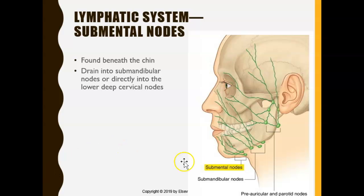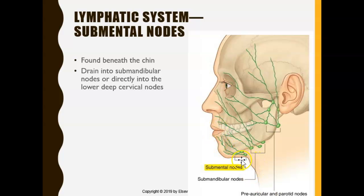The submental node is right underneath the chin. Only the lower incisor teeth drain here — the lymph fluid from the lower incisors gets drained and moves up into the submental nodes. There are blood vessels and lymphatic vessels here, and they drain the lymph from the lower incisors into the submental nodes.